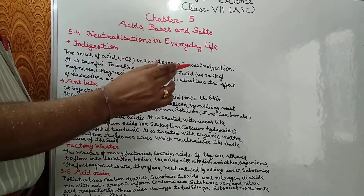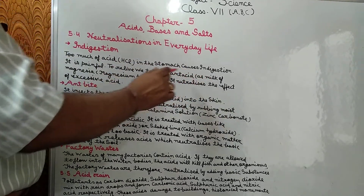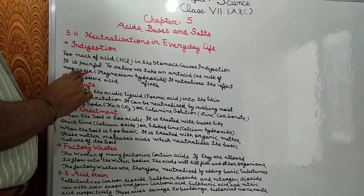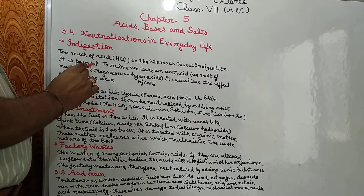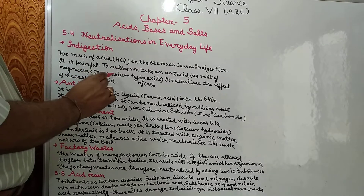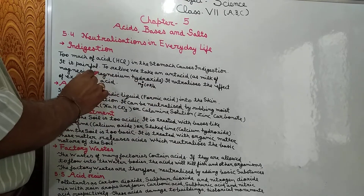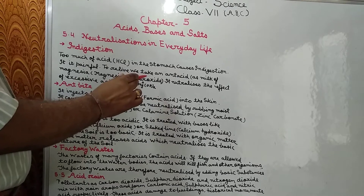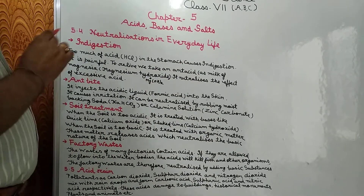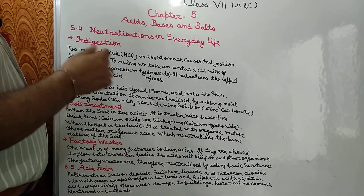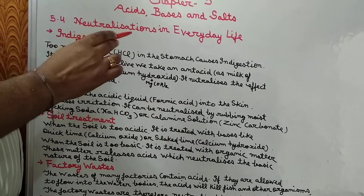We take an antacid. An antacid is a medicine which is basic in nature. For example, Milk of Magnesia — which contains Magnesium Hydroxide, Mg(OH)2. This neutralizes the effect of excess acid and provides relief. This is the neutralization process in digestion.